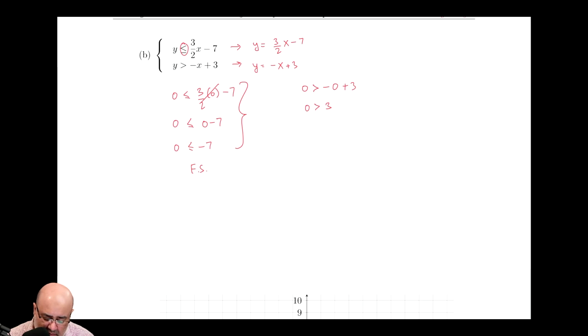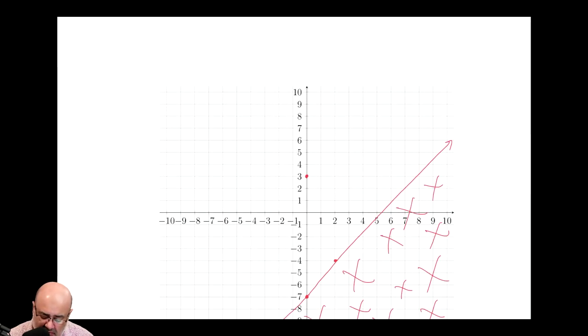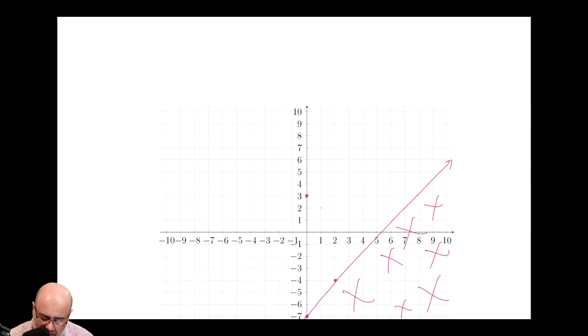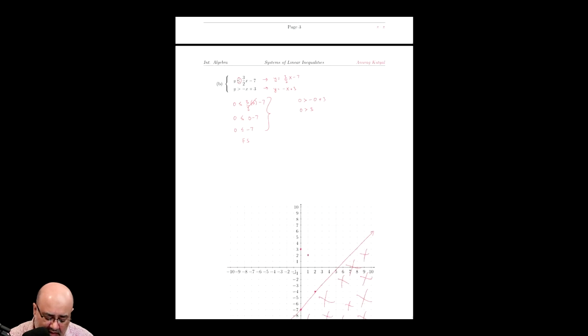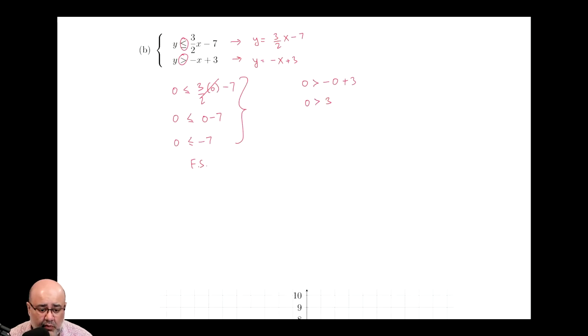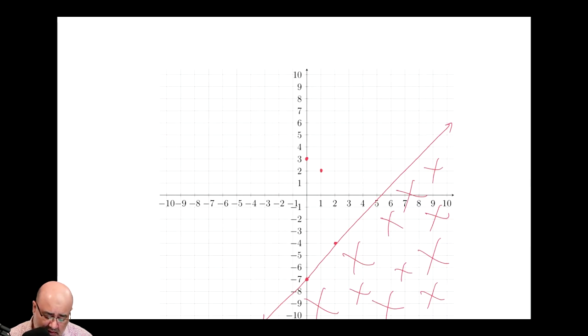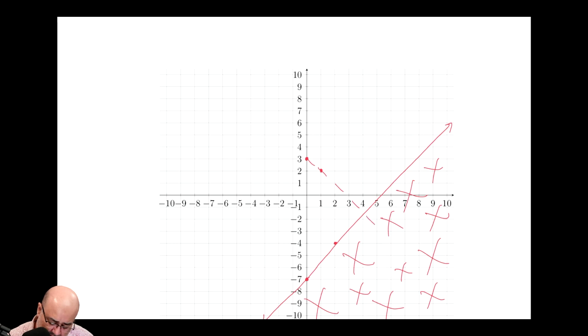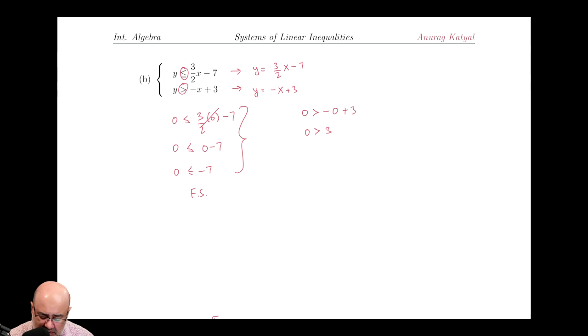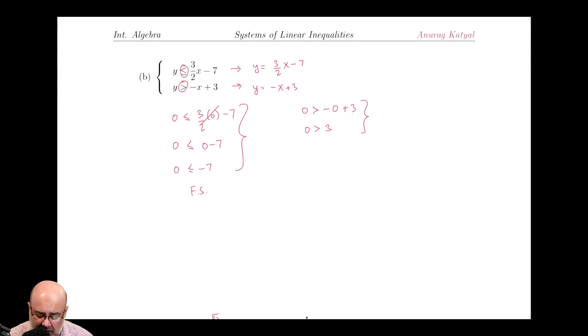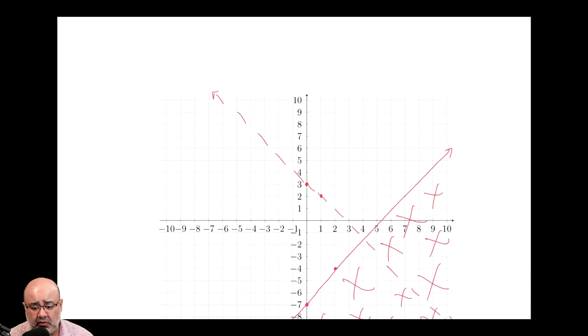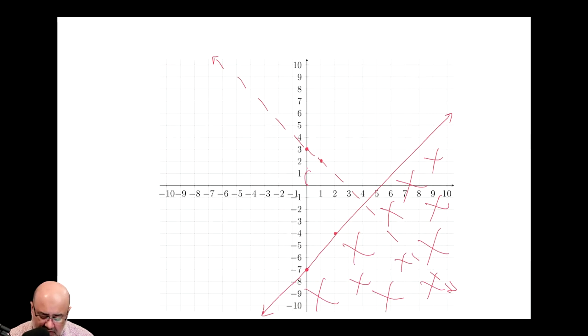And then for the other one, negative x plus 3, that one's not too bad. Y-intercept of 3, slope of negative 1. So down one, the right one. And because this is greater than with no equal to, it has to be a dashed line. So here, I make a dashed line going to the right, and a dashed line going to the left. Again, we can pick the origin as our test point because the line doesn't go through it, which is done right here. We get 0 is greater than 3, which is another false statement. 0 is not greater than 3, which means I have to shade on the other side of the origin. So this is where all the circles go.